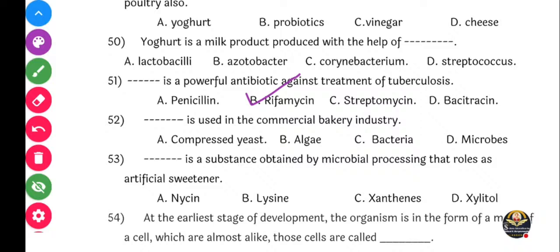Next question: Dash is used in the commercial bakery industry. Options: Compressed yeast, algae, bacteria, or microbes. Correct answer: compressed yeast, option A.